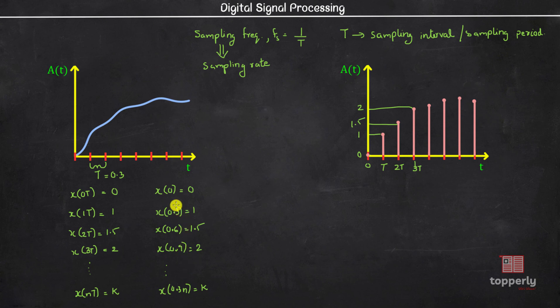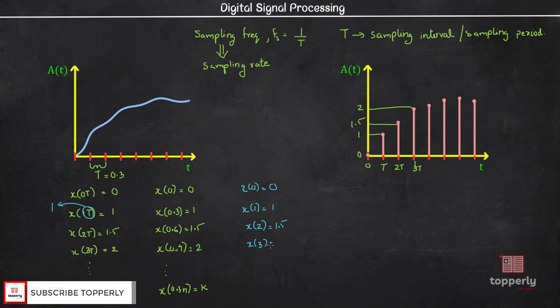Also we lost the counting ability like this is the 0th sample, this is the first sample, this is the second sample, etc. So to have convenient integer values at the moment of sampling, we will normalize the value of t by setting its value equal to 1. Then we have x of 0 equal to 0, x of 1 equal to 1, x of 2 equal to 1.5, x of 3 equal to 2, etc. to x of n equal to k. This way the quantity x of n denotes the nth sample of the sequence.